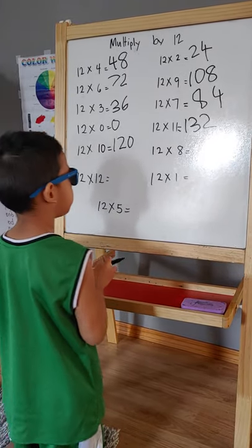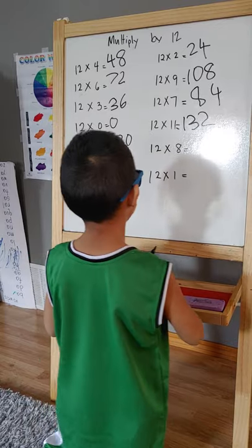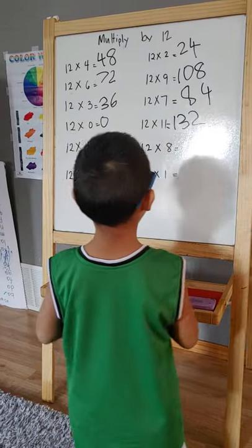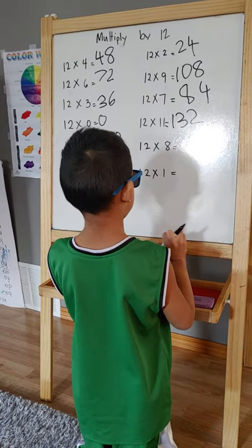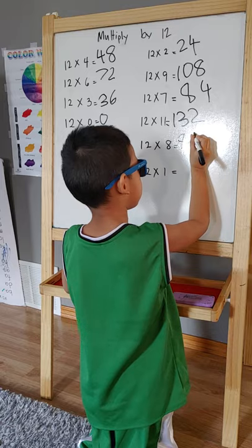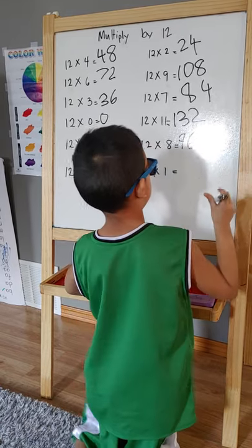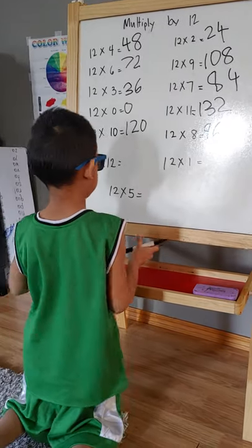Twelve times eight: okay, twelve times eight equals ninety-six.